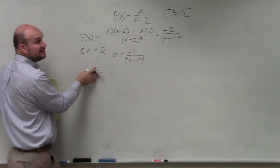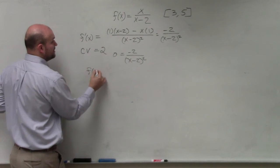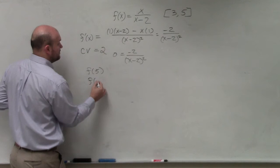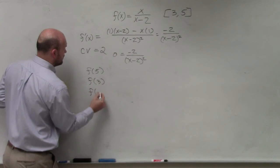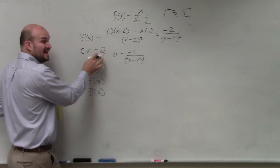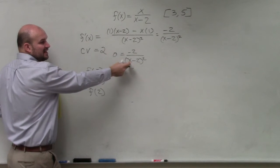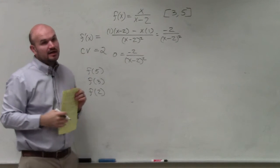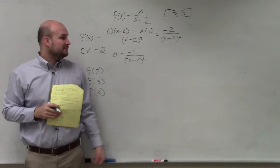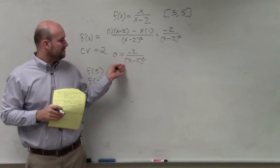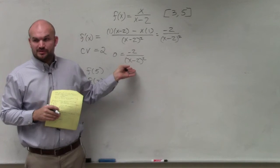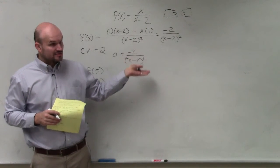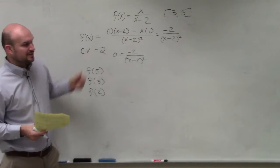So now, to check our extreme value theorem, we need to test our endpoints, f of 5, f of 3, and our one critical value of f of 2. And again, f of 2 is a critical value because it's not what it equals, but it makes this function, it makes the derivative non-differentiable, it makes it undefined when you plug in 2, right? Because 2 minus 2 is 0, 0 squared is 0, and you can't divide by negative 2.